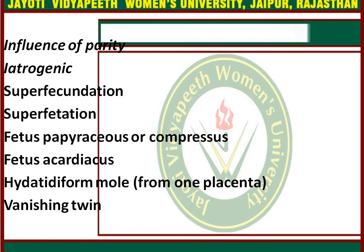Regarding maternal physiological changes during multiple pregnancy: there is an increase in weight gain and cardiac output. Plasma volume is increased by around half a litre more. There is also an increase in alpha-fetoprotein level, and tidal volume and uterine size per head will be greater.